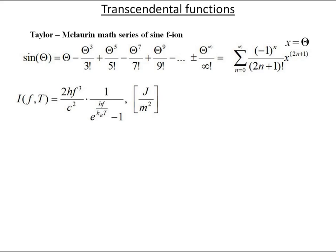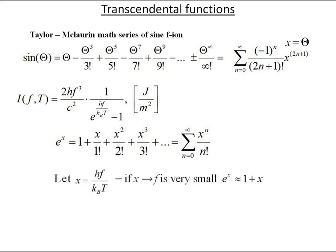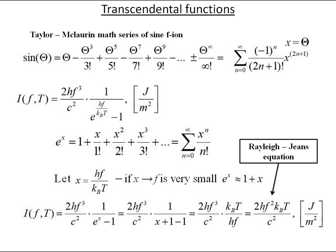One evidence is ultraviolet catastrophe, also called the Rayleigh-Jeans catastrophe. It was the prediction of 19th century, early 20th century classical physics that an ideal black body at thermal equilibrium will emit radiation in all frequency ranges, emitting more energy as the frequency increases. Rayleigh-Jeans equation can be derived from Planck equation for very short range of frequency. Let x and frequency is very small.